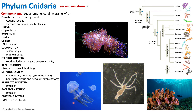In regards to reproduction, it can be sexual or asexual, similar to Porifera — we can see budding in cnidarians as well. When we talk about the nervous system, we have a very rudimentary nervous system. We don't have a brain, but we do have contractile tissues and nerves in their simplest form. For respiration and excretion, cnidarians do not have many layers of cells, so most of their cells are in direct contact with the surrounding water, allowing them to respire and excrete simply through diffusion.